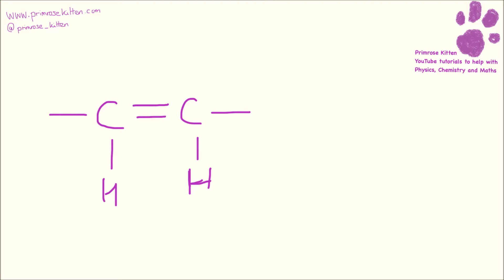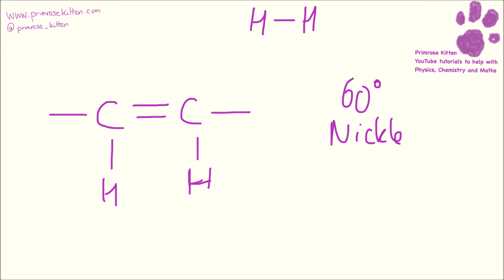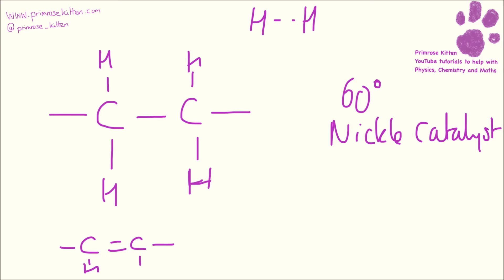Here we have an unsaturated compound which has a double bond. When we harden something, we have hydrogen gas that comes in, and it needs to be done at 60 degrees with a nickel catalyst. The temperature and the nickel catalyst mean that this double bond here will break, and the hydrogens will come in here like this. So we're going from a double bond to a single bond, and this is going to harden the oil.